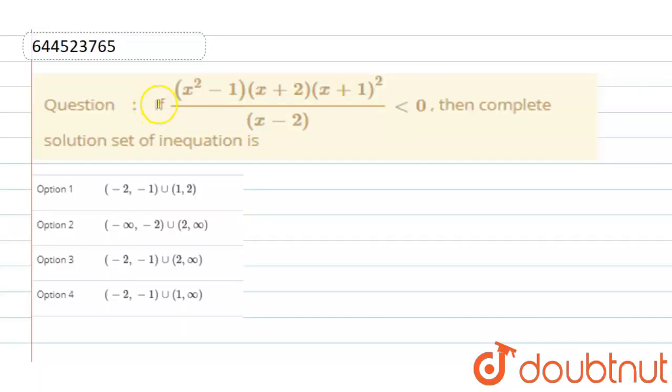Here the question is given: (x² - 1)(x + 2)(x² + 1)² / (x - 2) is less than 0.